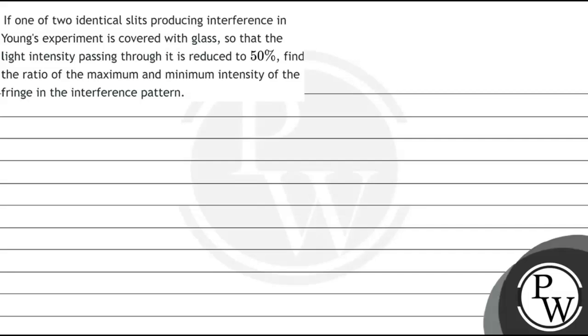Hello, let's read this question. If one of the two identical slits producing interference in Young's experiment is covered with glass so that the light intensity passing through it is reduced to 50%, find the ratio of maximum and minimum intensities of the fringe in the interference pattern.